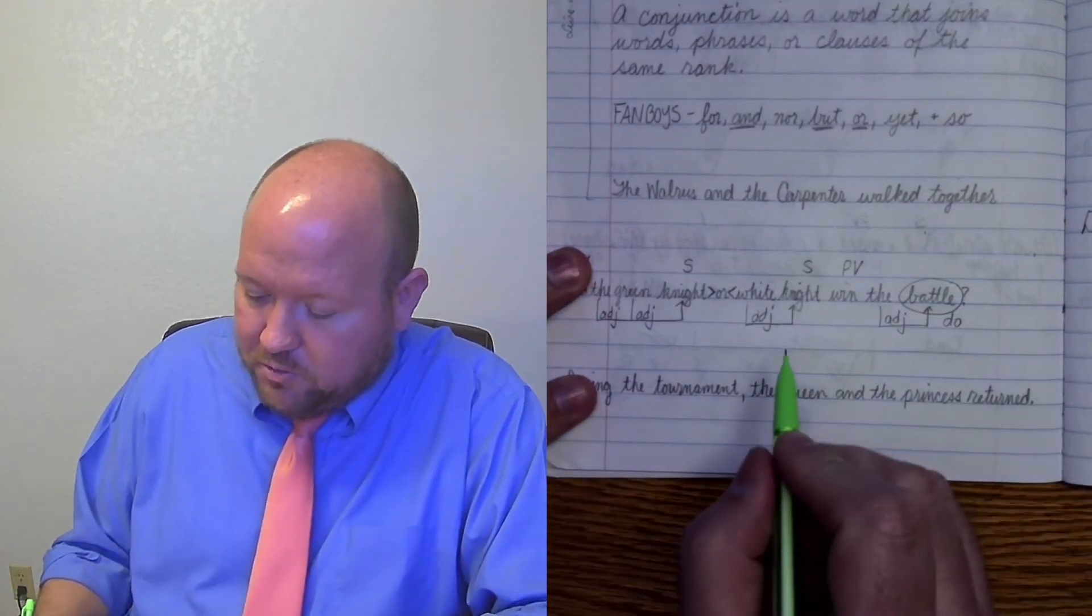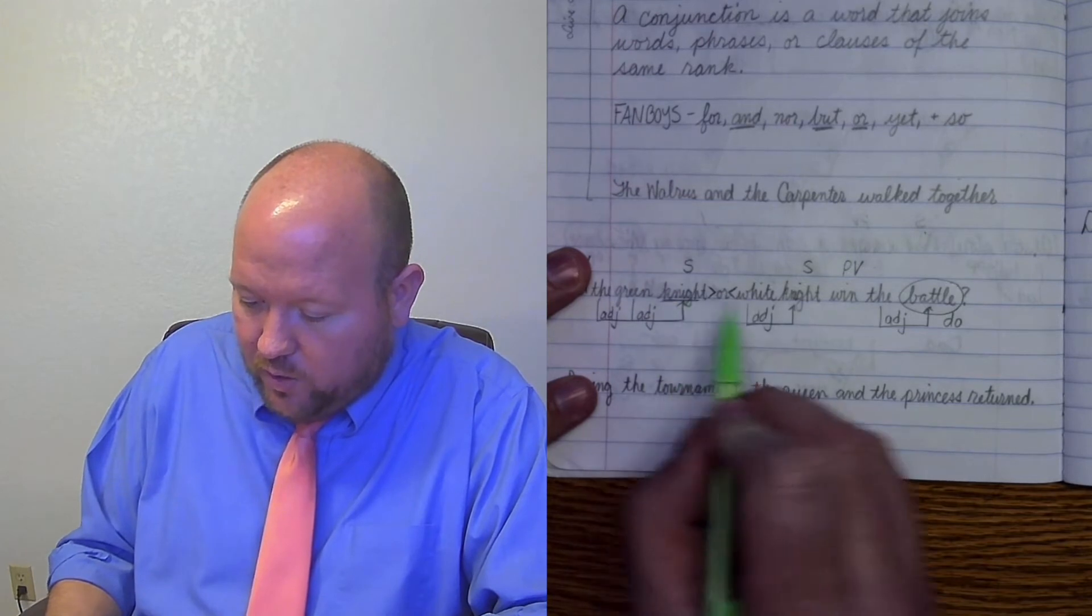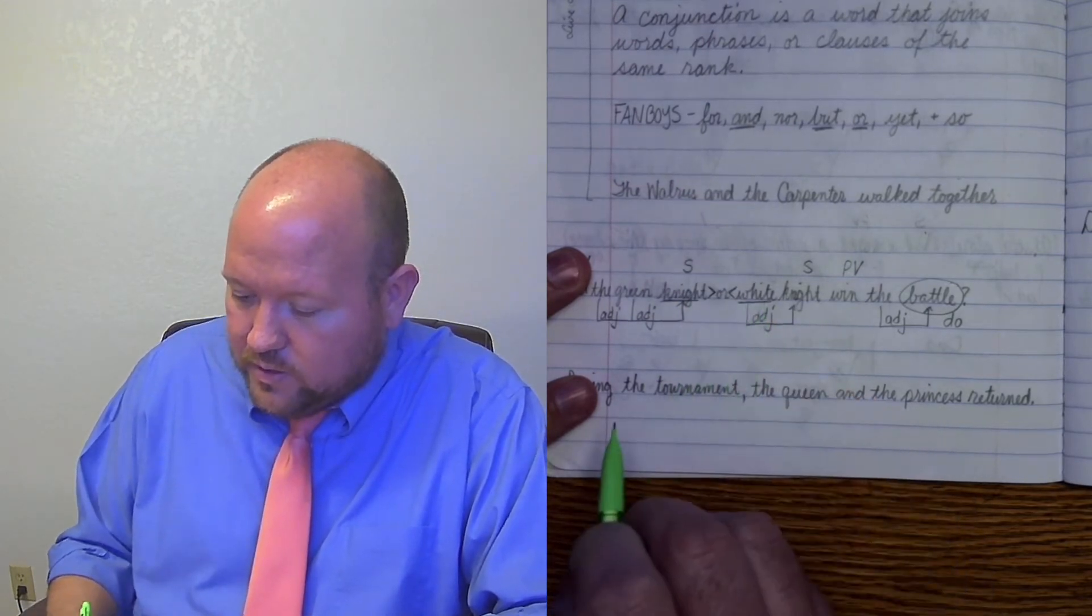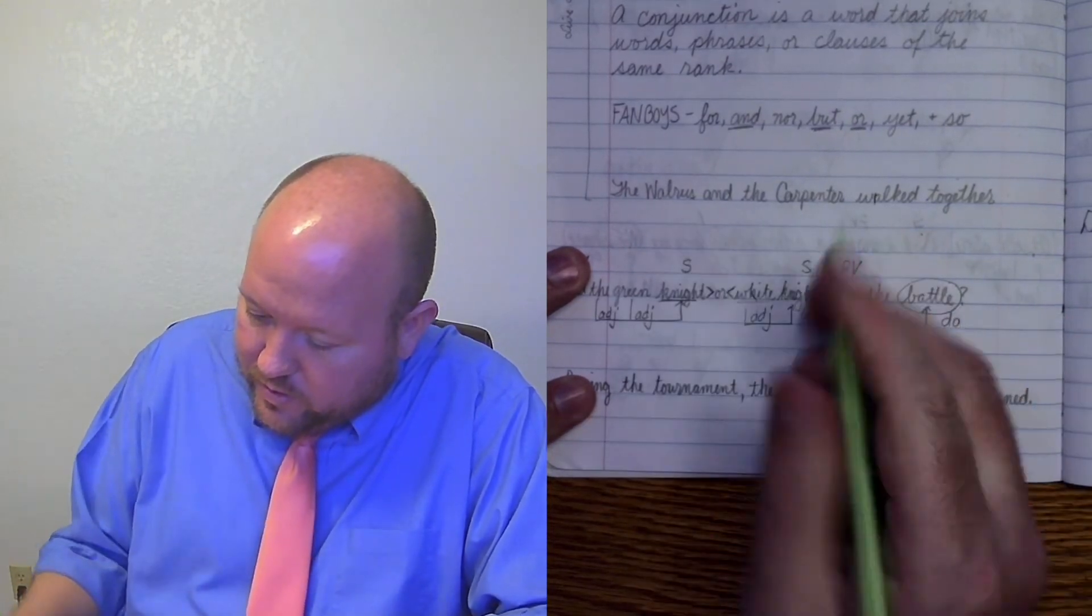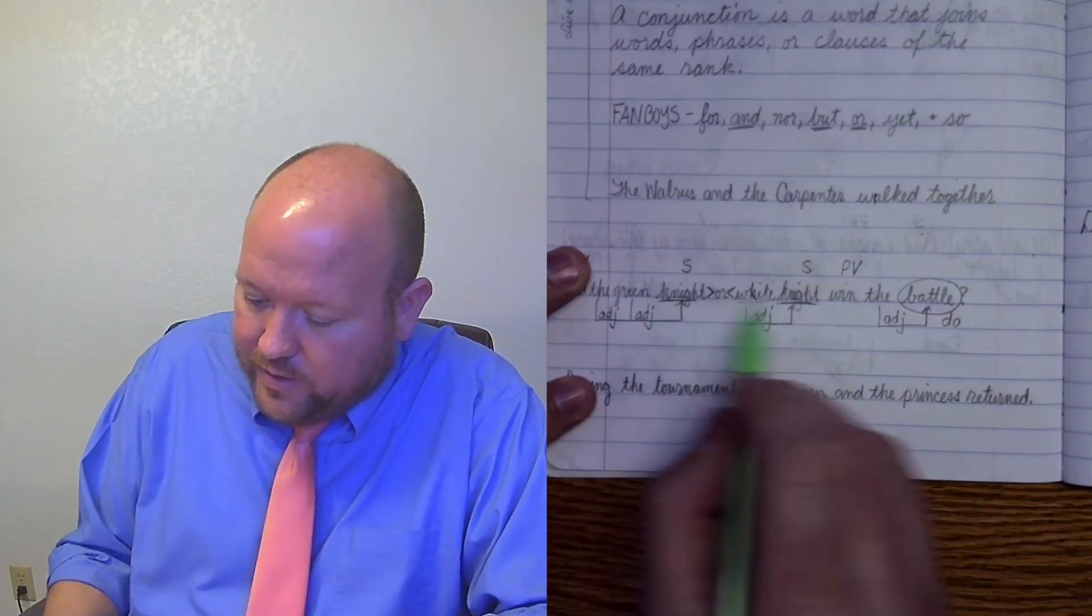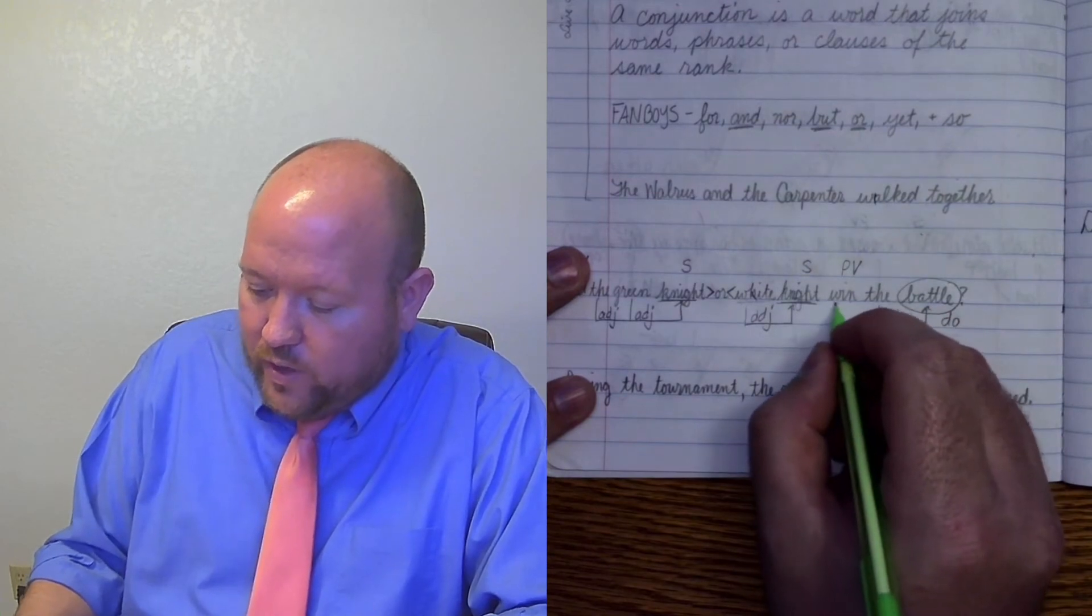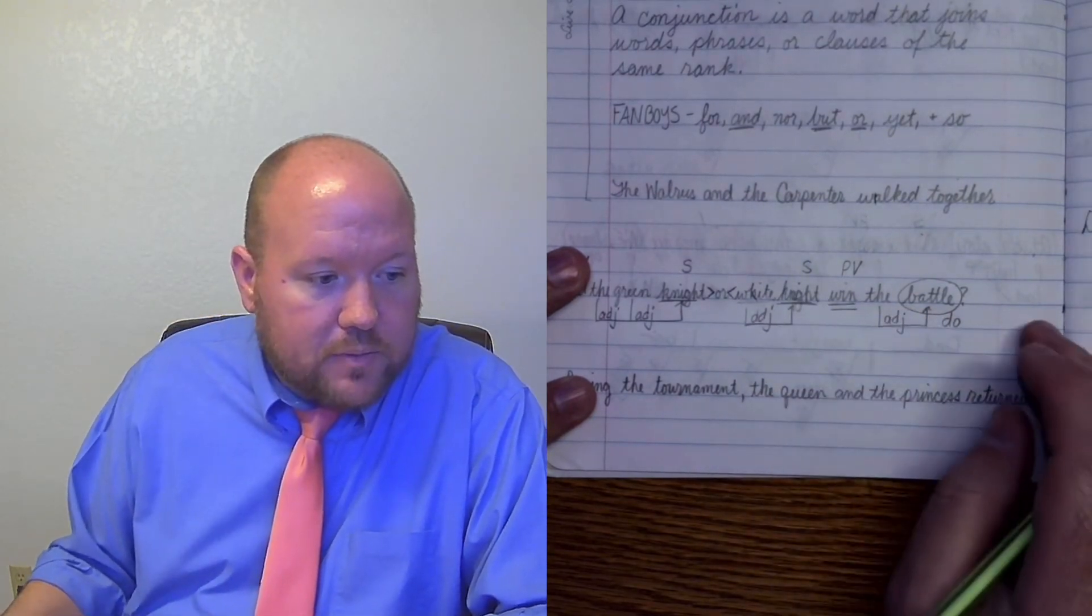All right, we want to underline the subject once. We have two subjects. We're underline once, underline once, and win is, oops, underlined white, not knight. So underline knights, knight, underline, and then win, underline twice.